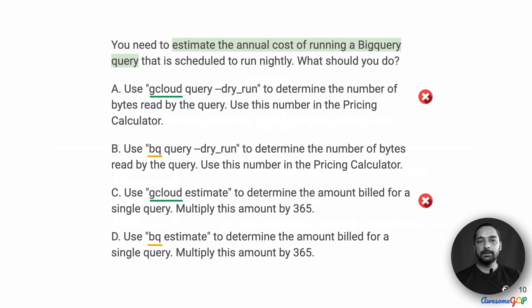Without this understanding, we can knock off two of the options — A and C — because both of them attempt to use gcloud to get to the result.